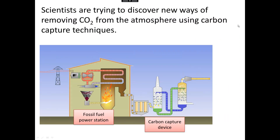Now scientists are trying to discover a wider range of ways of removing carbon dioxide from the atmosphere. Sometimes this is called carbon capture techniques. This diagram represents a fossil fuel power station where coal or gas is being burnt in order to create steam, in order to drive a turbine, in order to spin a generator. Attached to that is a carbon capture device — a new invention to try to remove CO2 from the chamber where the fuel is being burnt.